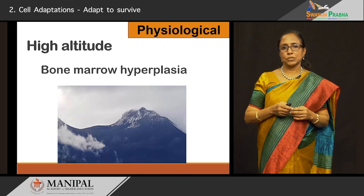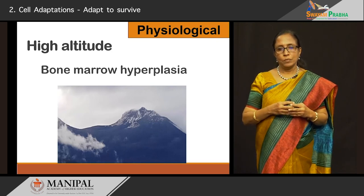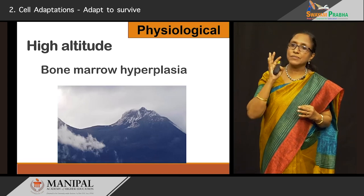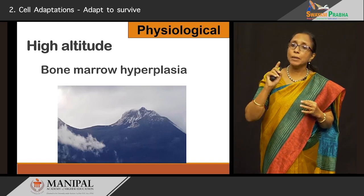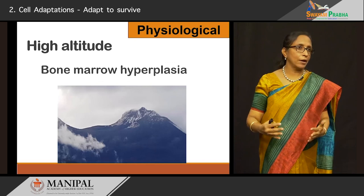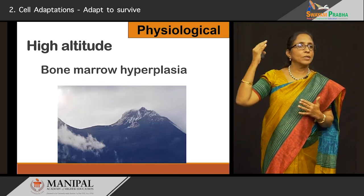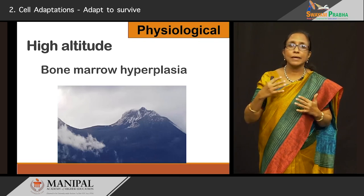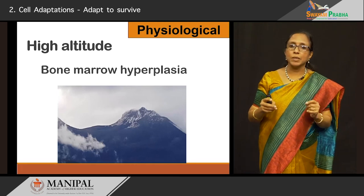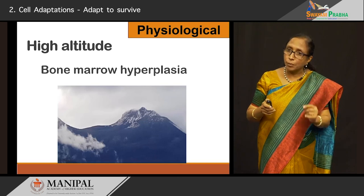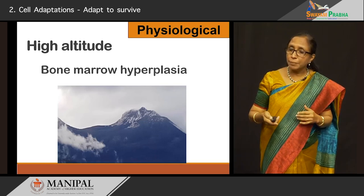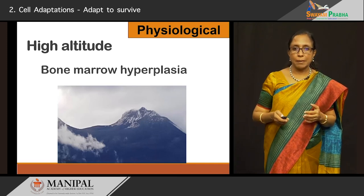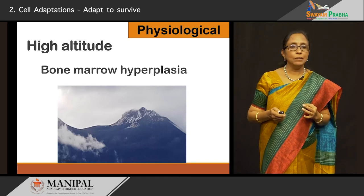Another physiological condition: high altitudes. We know that Tenzing and Hillary conquered Everest. Tenzing, being a Sherpa, lives in the high altitudes. The people in high altitudes have their bodies adjusted to those conditions. There is hypoxia at high altitudes, so to compensate, there is what is called bone marrow hyperplasia. The hyperplastic bone marrow hematopoietic cells produce a lot of RBCs, resulting in polycythemia — and that is a protective mechanism. That is one more example of physiological hyperplasia.